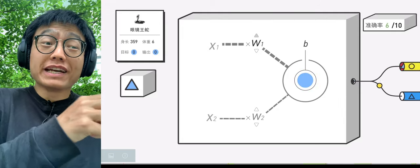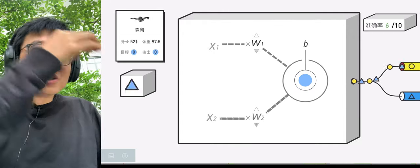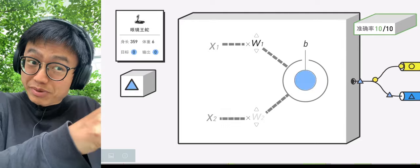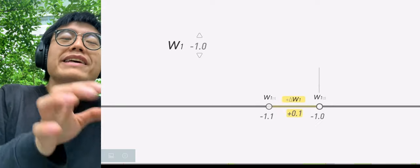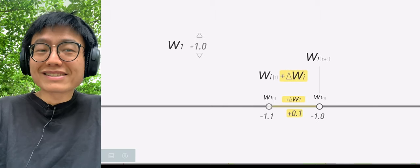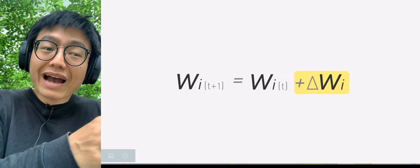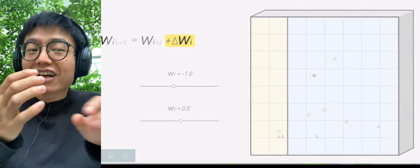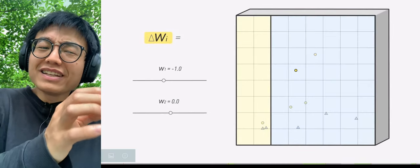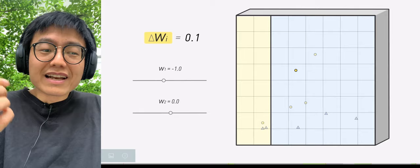It seems that as long as we iterate through W1 and W2 one point at a time, we will get closer and closer to the correct parameters until the complete classification is successful. If we use mathematical language to express what just happened, it is Wi(t+1) equals Wi(t) plus delta Wi. So as long as we set a reliable delta Wi calculation method, we can make the machine adjust itself round by round until the classification is complete.